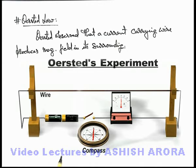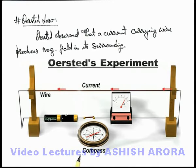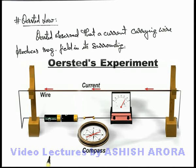Here you can see if we reverse the battery and again close the switch, the direction of current is reversed. As soon as the current flows, the compass needle is deflected in the direction opposite to the previous case. That means the direction of the magnetic field also changes as the direction of current changes. So this is the experiment based on which Oersted got the inference that a current-carrying wire produces a magnetic field in its surrounding.